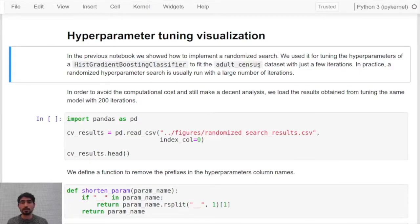In that case we only used a few iterations but in practice you would have to run a large number of iterations to try different combinations of hyperparameters.